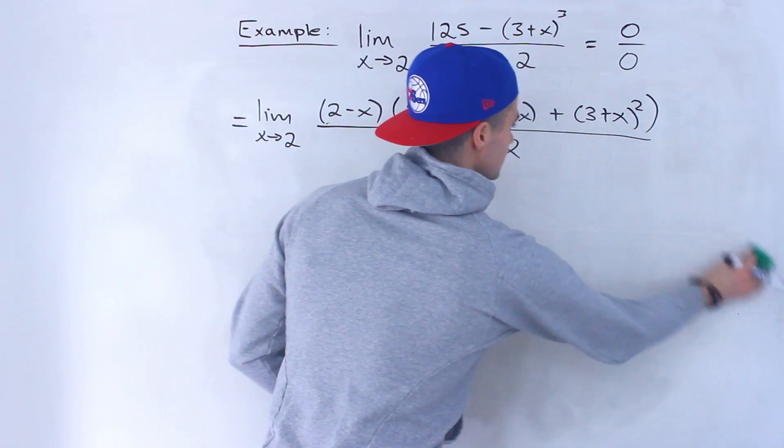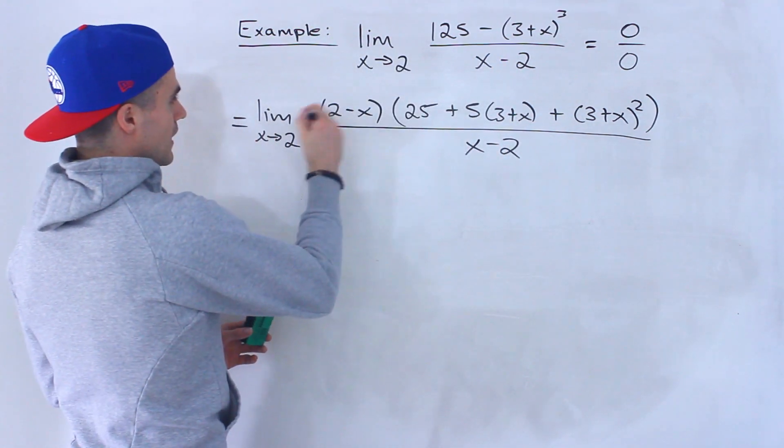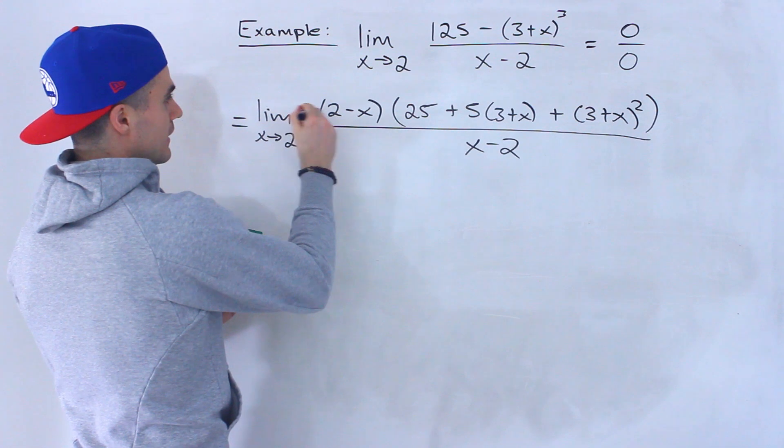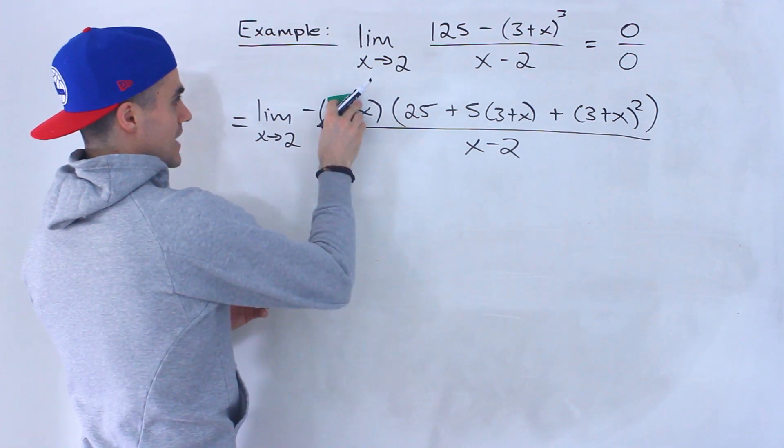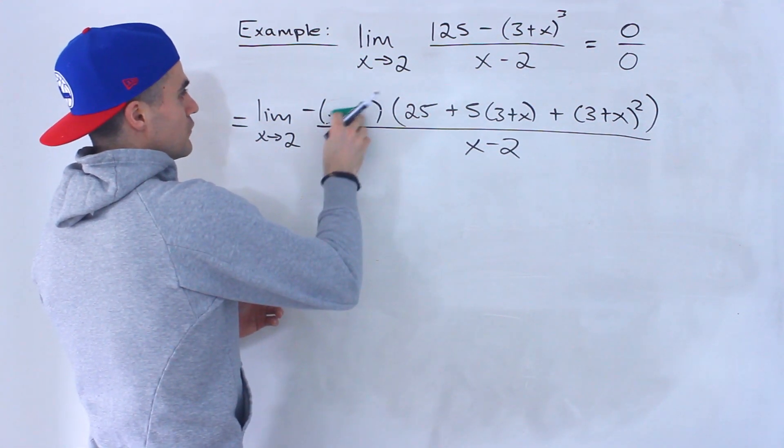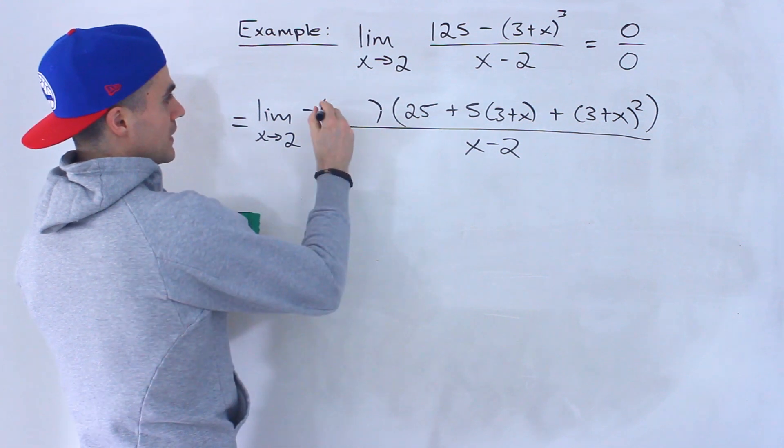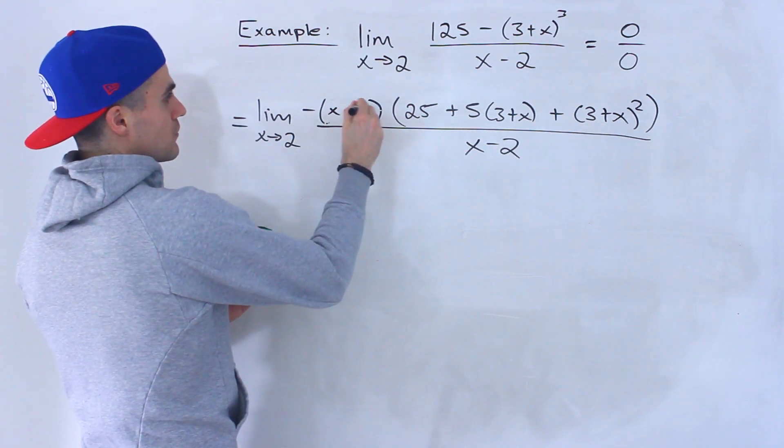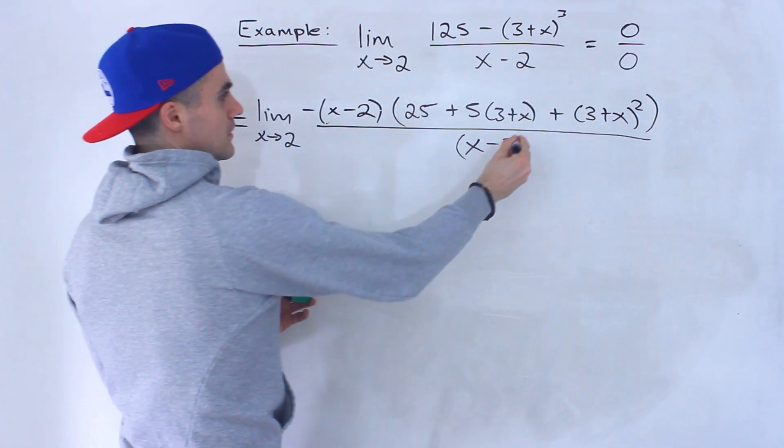What we've got to do is we've got to factor out a negative from this bracket in order to get it the same as x minus 2. So if we do factor out a negative, it would end up being negative (2 minus x), which we could rewrite as x minus 2.